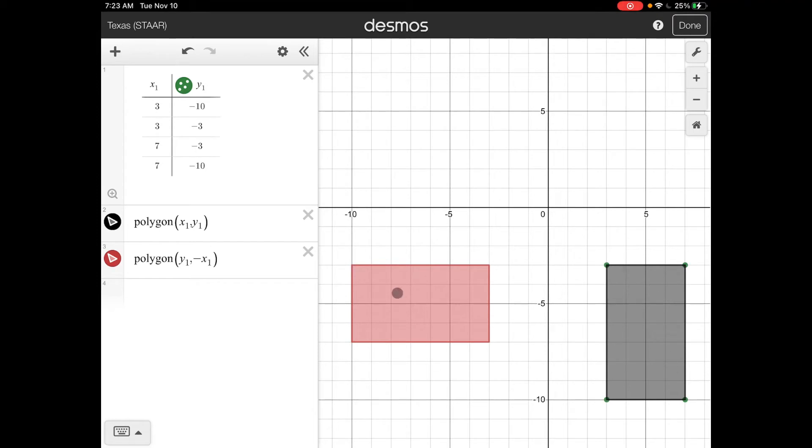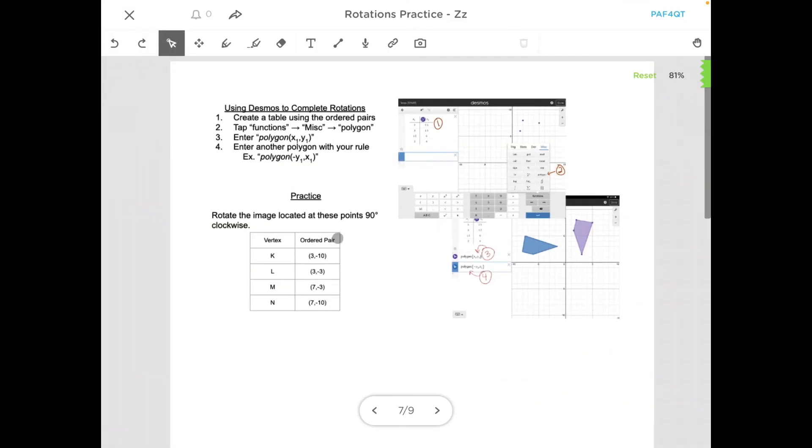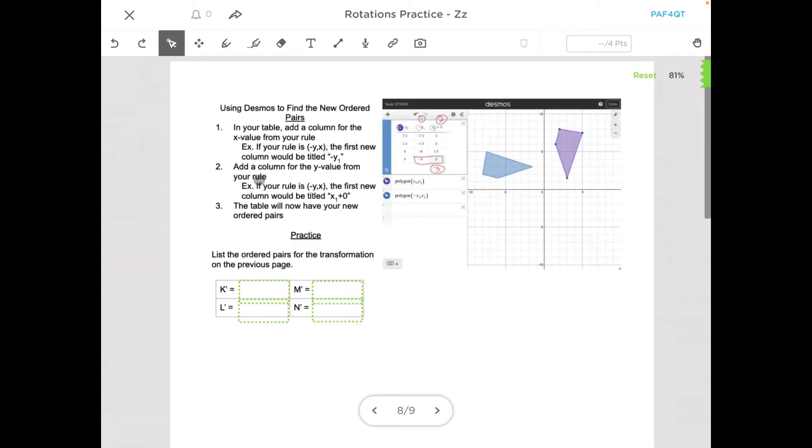That shape 90 degrees clockwise, so it took it and we kept the same y values but we made the x values the opposite, so it made our polygon there. Okay, so we rotated it.